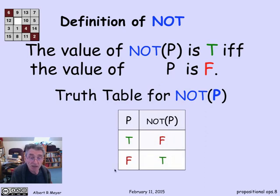There's its very trivial truth table. Trivial because there's only two values to be concerned about. When P is true, not P is false. When P is false, not P is true.